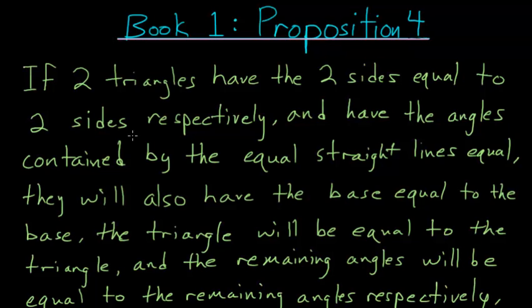If two triangles have two sides equal to two sides respectively and have the angles contained by the equal straight lines equal, they will also have the base equal to the base.